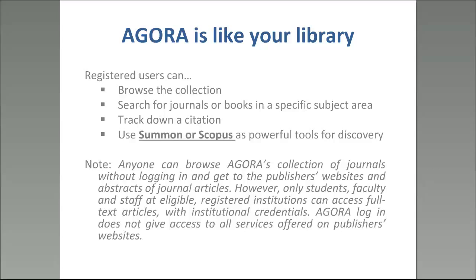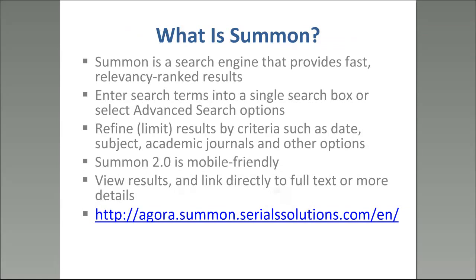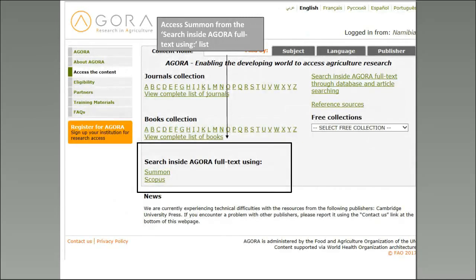So what is Agora? It's a portal — like your library. You can go in and search on a topic, search for a journal, and dig deeper to find links to databases and other things that might be useful. There are a couple of different search options: Summon and Scopus. In the lower left-hand side of the Agora portal, you can see there's an option to search the full text using Summon and Scopus.